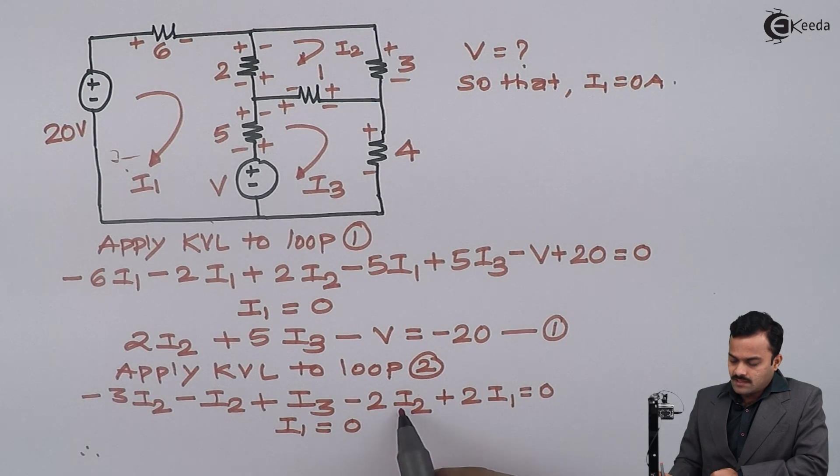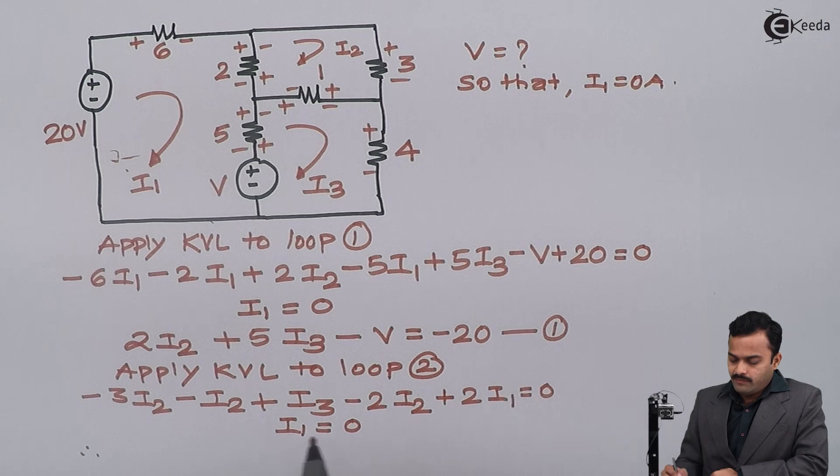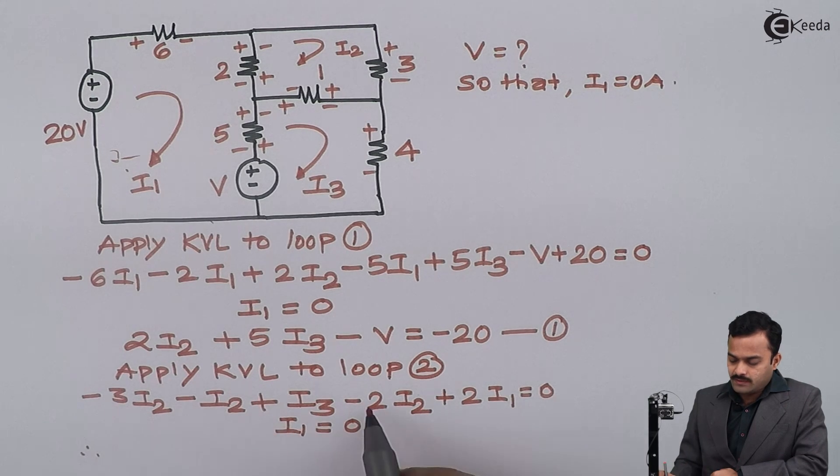So that this term will become 0, and finally I will get minus 3 minus 1 and minus 2 will become